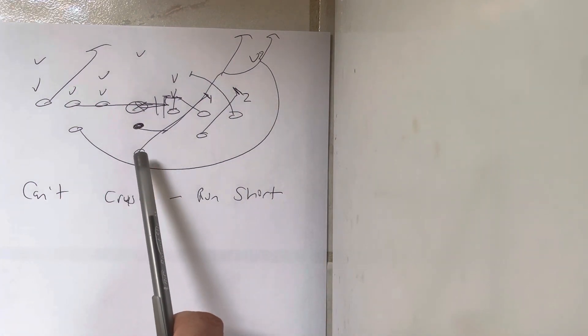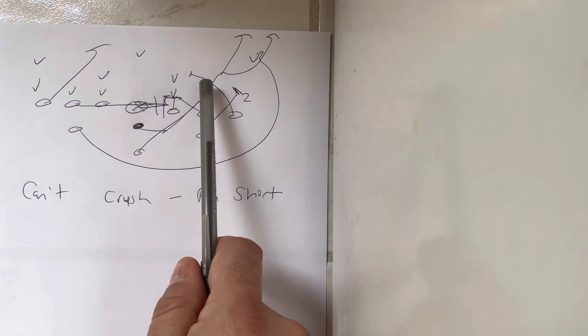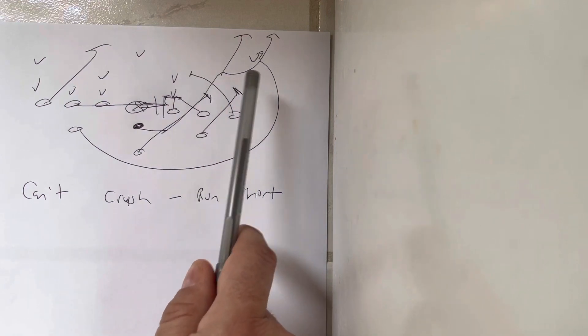The B back's going to run his path just like he does on zone dive. He's going to go through the ball, and then he's going to go right through and get his helmet to the left of number one, get his right forearm through number one, and then drive him out of bounds.